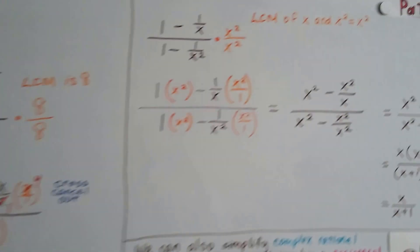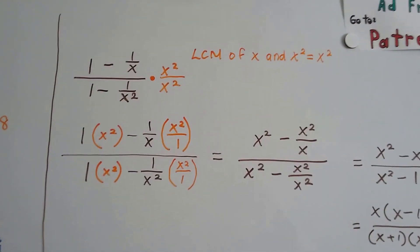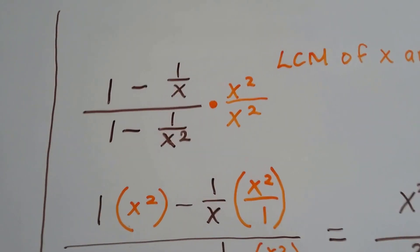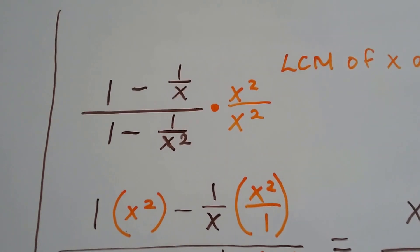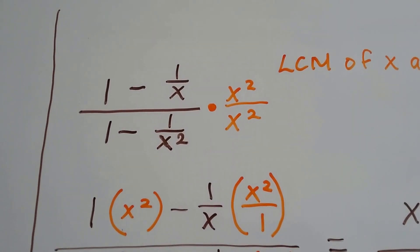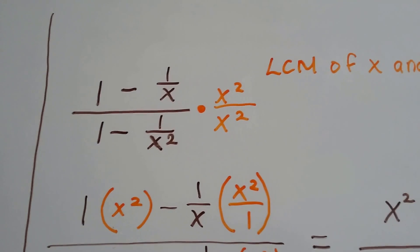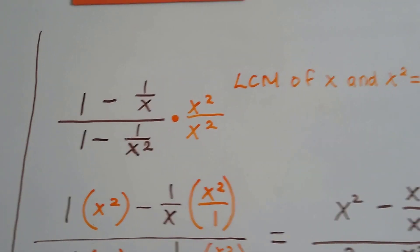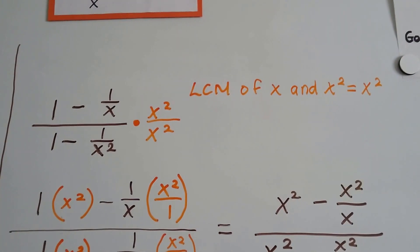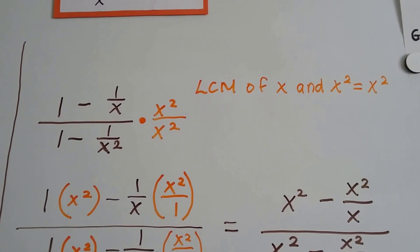Okay, let's try this one. We've got 1 minus 1 over x, over 1 minus 1 over x squared. Well, the least common multiple of x and x squared is x squared.